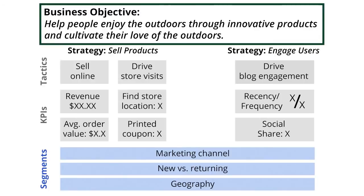The segments you choose can be the same or different across all of your website objectives — it all depends on what your business is doing and which strategies and tactics are being used to reach your objectives. Finally, you need to add some context to your data so that you can better understand the performance of your business. You need to know, from the business leadership, the targets for each of your KPIs. Adding targets to the measurement plan helps everyone who looks at the data understand if the business is doing well or doing poorly.